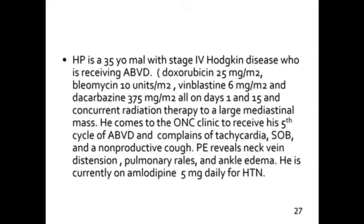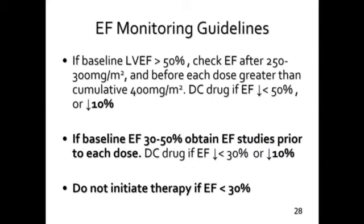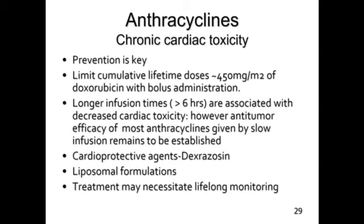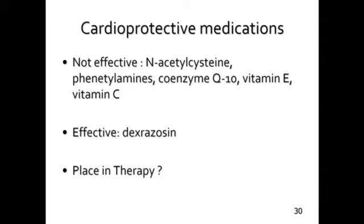This patient came in demonstrating symptoms of congestive heart failure. It's not entirely realistic because he only has about 200 mg/m², but he does have risk factors including concurrent radiation and hypertension. Basically, if you get a large enough decrease in ejection fraction, you'd change to different therapy. Prevention is key — limit lifetime doses to around 450 mg with bolus administration, or roughly double that with continuous infusions. You can also use liposomal formulations; in gynecologic oncology, patients sometimes get significantly higher anthracycline exposure — like 1,000 mg/m² — with the liposomal product.